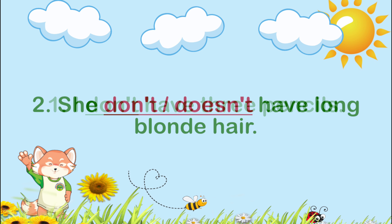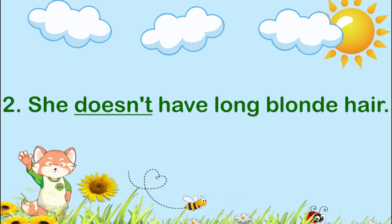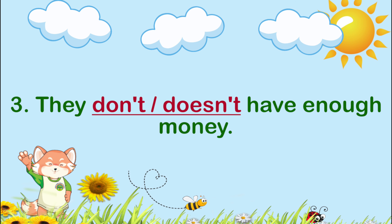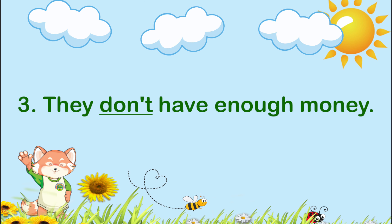Number two: She ___ long blonde hair. The answer is doesn't have. She doesn't have long blonde hair. Number three: They ___ enough money. The answer is don't have. They don't have enough money.